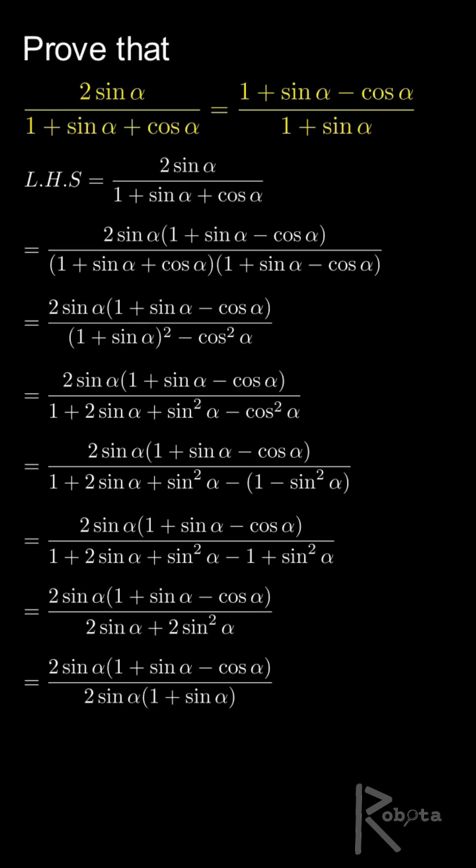Since both the numerator and denominator contain 2 sin α, we cancel them out. Now we are left with 1 plus sin α minus cos α divided by 1 plus sin α, which is exactly the right-hand side of the original identity.